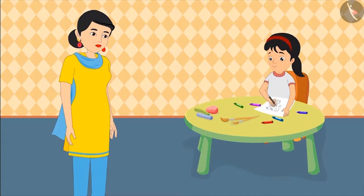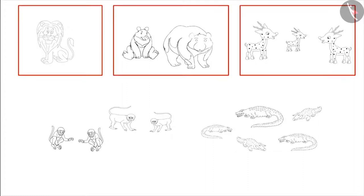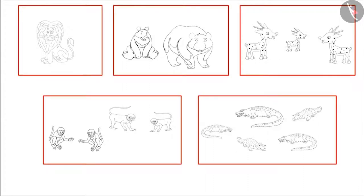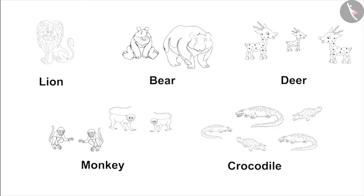How are these drawings? Wow, Pinky, you have made very good drawings! Now make a group of one type of animals and give each group a name. The name of each group should be the name of the animals shown in it. Now below each group, write the number of animals in that group.